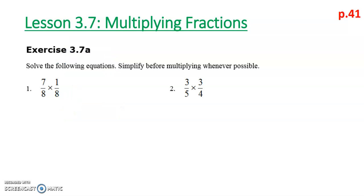We'll do a few select exercise questions together. For 3.7a number 1, we see the same denominators, but that's just coincidence. Looking across to cross-reduce: 8 and 1, and 7 and 8 — there's nothing to divide by. So 7 times 1 is 7, and 8 times 8 is 64. For number 2, we look across at 3 and 4, and 5 and 3 — there's nothing to cross-cancel. These first two questions show that cross-reduction isn't always possible; we look for it wherever we can.